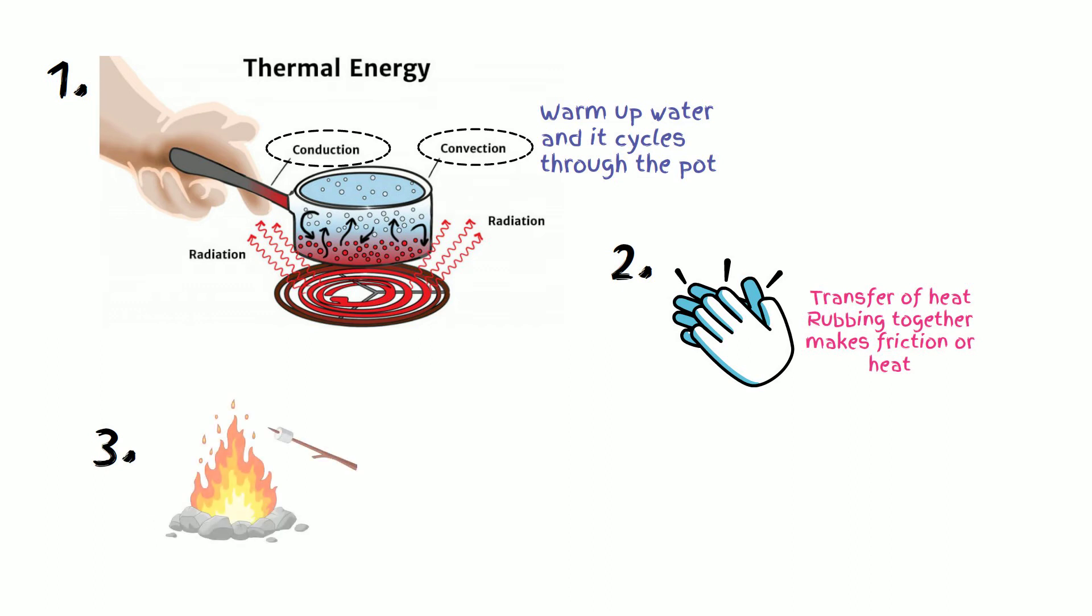Number three, the last example is when we roast marshmallows over the open fire. Thermal energy is transferred which is known as radiation.